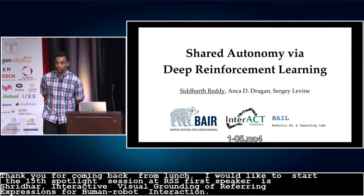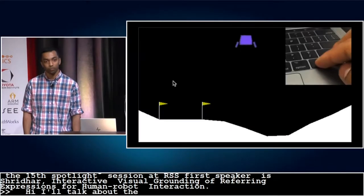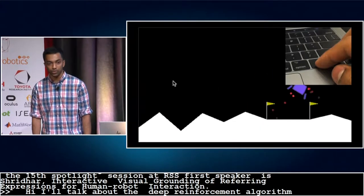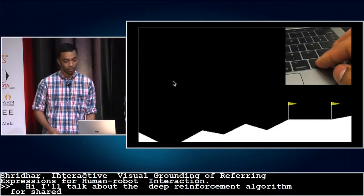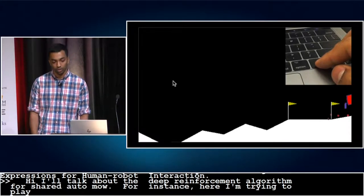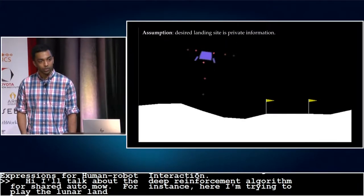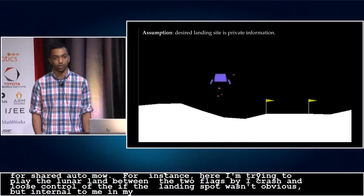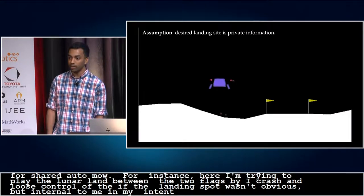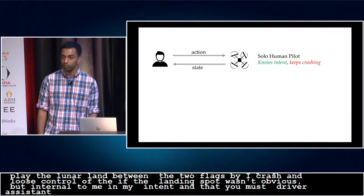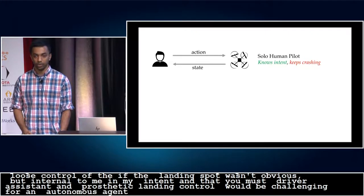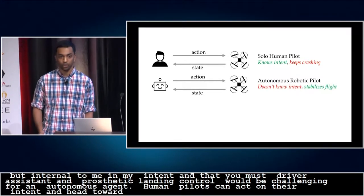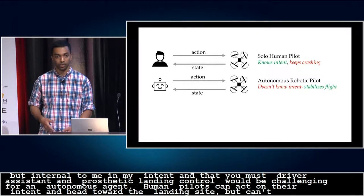Hi, I'm Sid, and today I'll be talking about a deep reinforcement learning algorithm for shared autonomy. Teleoperation is challenging for people because robots tend to have unintuitive dynamics. For instance, here I'm trying to play the lunar lander game and land between the two flags, but I keep crashing and losing control. If the landing spot wasn't obvious but instead was internal to me and my intent, an assumption that models real systems like driver assist and prosthetic limb control, then landing correctly would also be challenging for an autonomous agent.